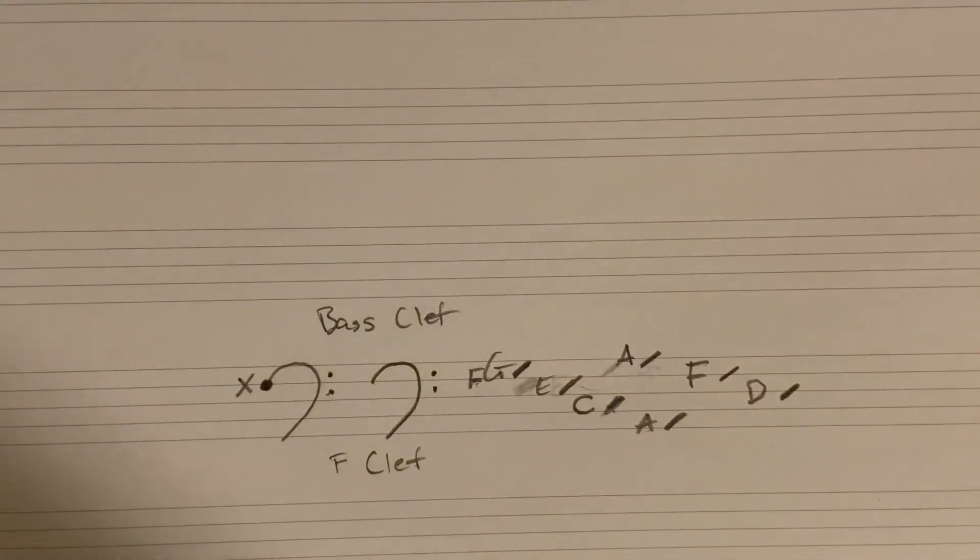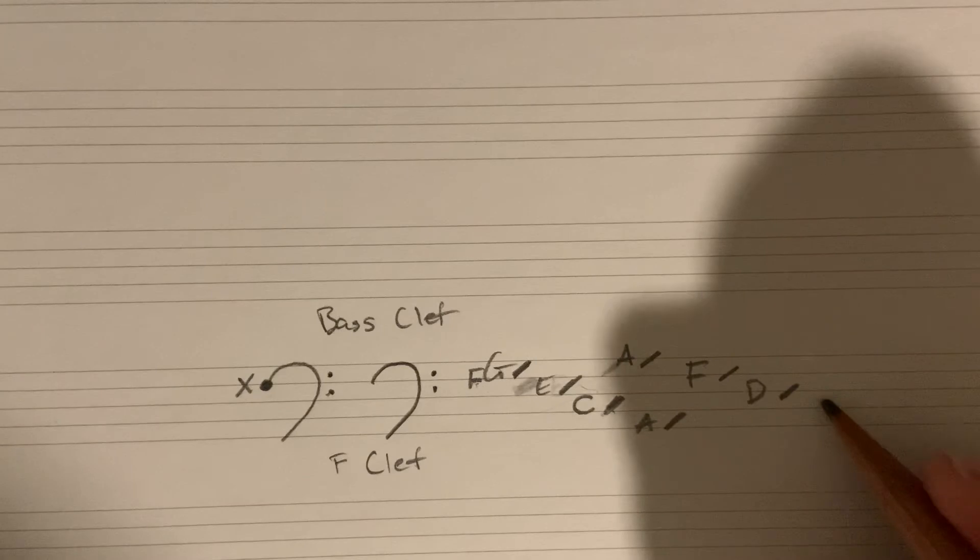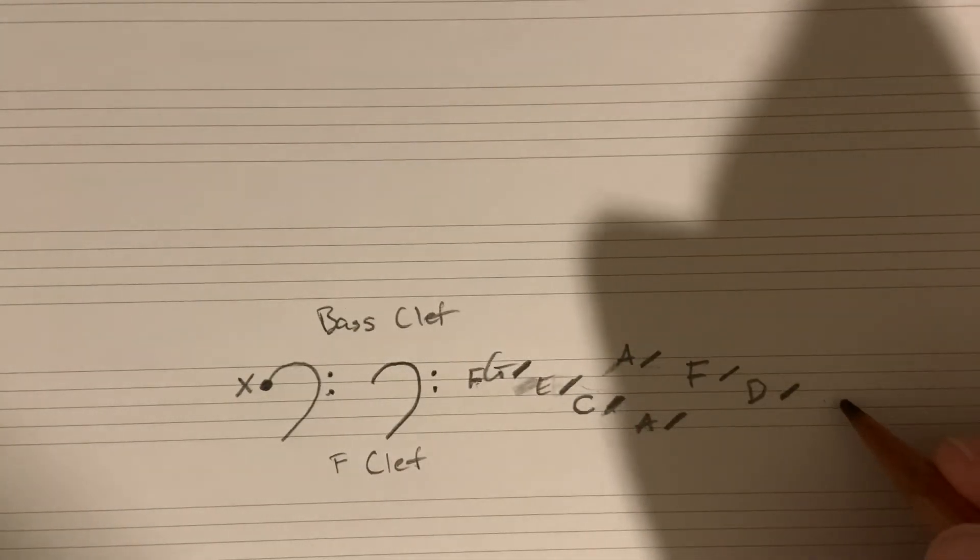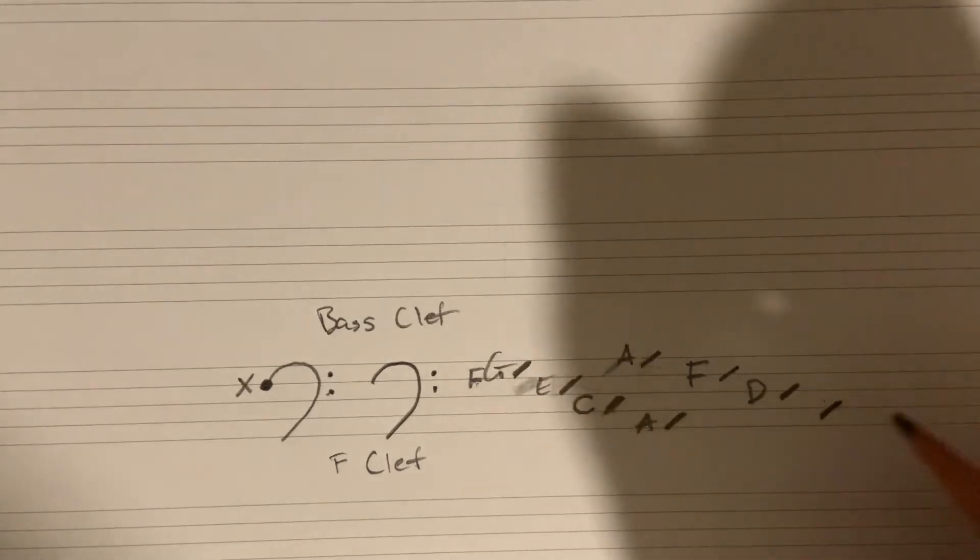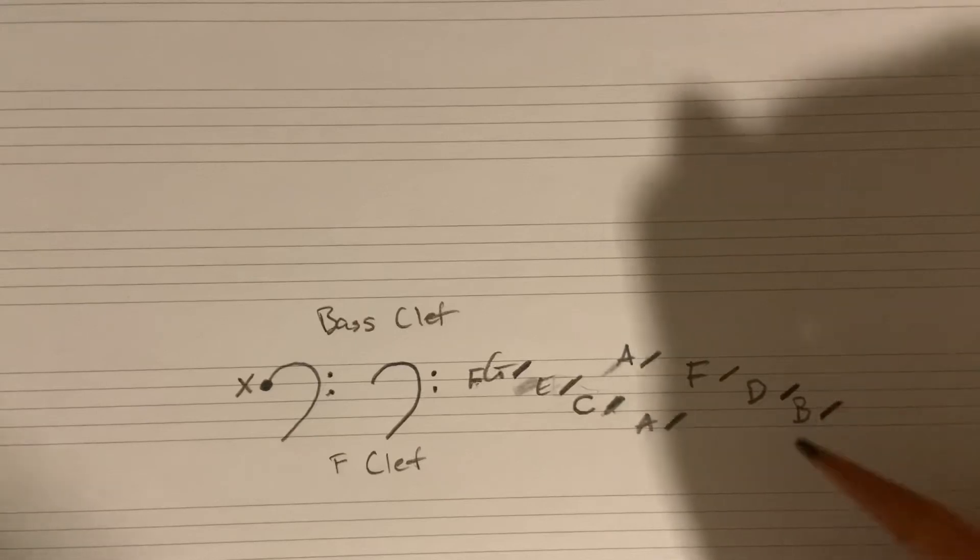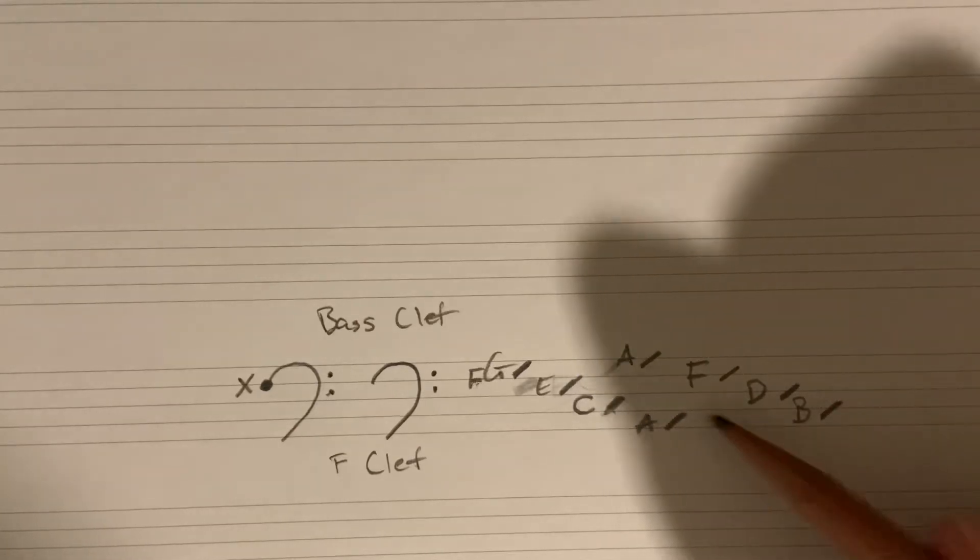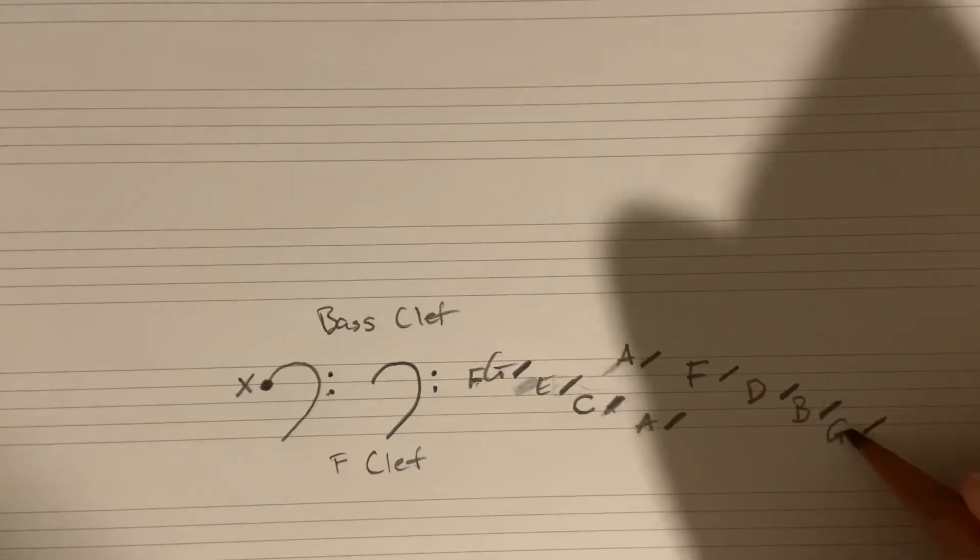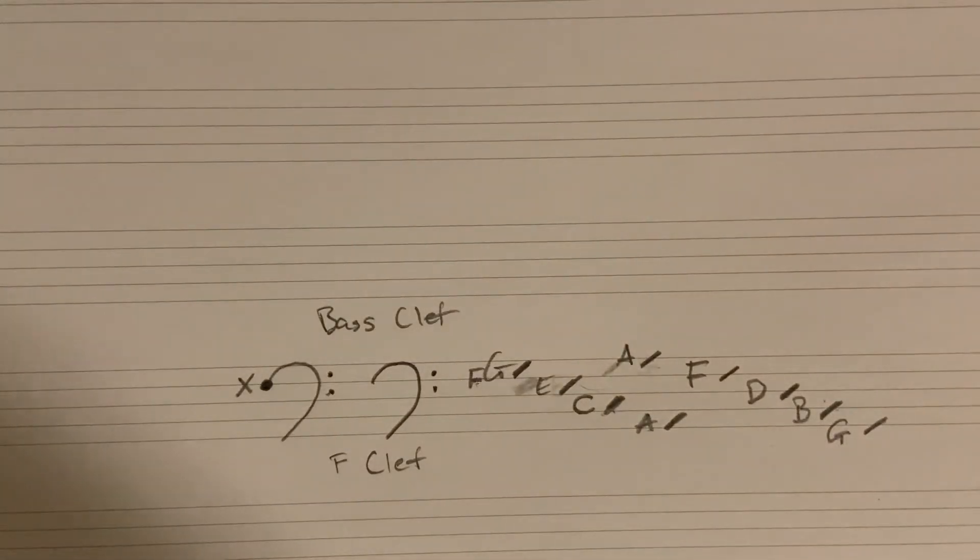Next one, we're going to skip this space, which we see is C here. You can find that with your alphabet method. And we go to this second line here, and we get B. And last but not least, we step down again. We have A, we get to our very bottom line. We skip A, and we are at G.